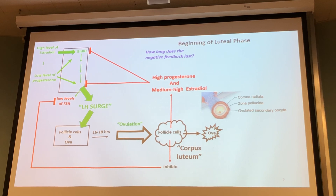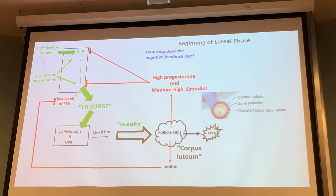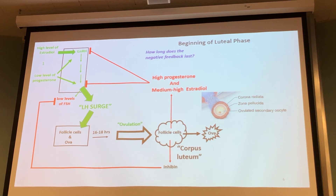This is really important: a moment ago high estradiol was doing a stimulation pathway, but now with lower estradiol and high progesterone we have a negative feedback pathway. We just ovulated the egg, and the whole purpose is to get pregnancy and implantation of the embryo into the uterine lining. I don't want to start another ovarian cycle if I'm going to be pregnant. So now we have a strong negative feedback — very low levels of GnRH, very low levels of LH — because that's what started the whole process.